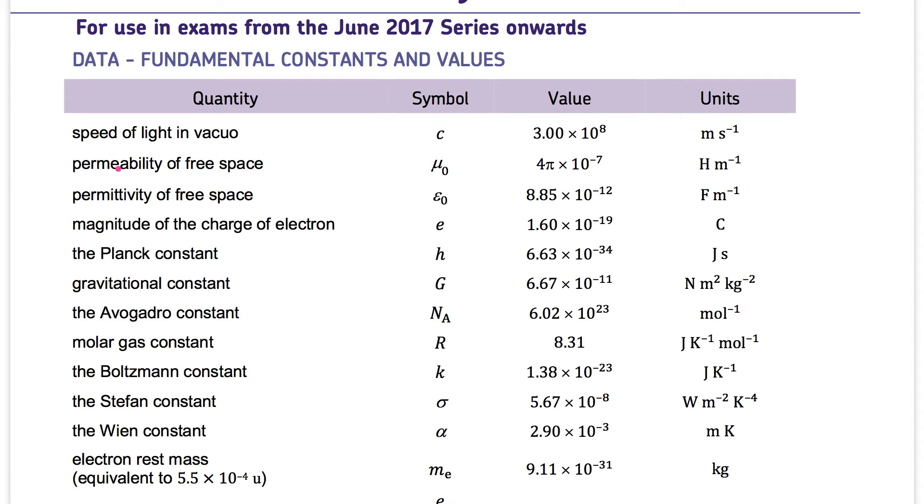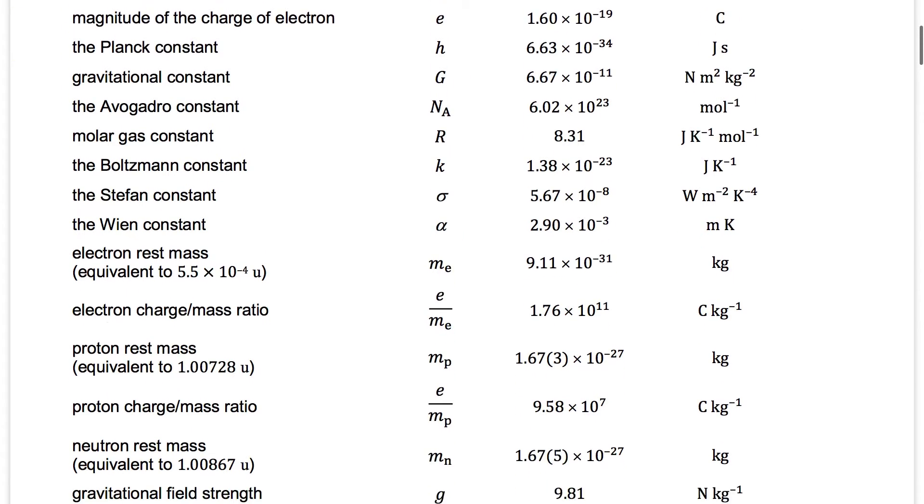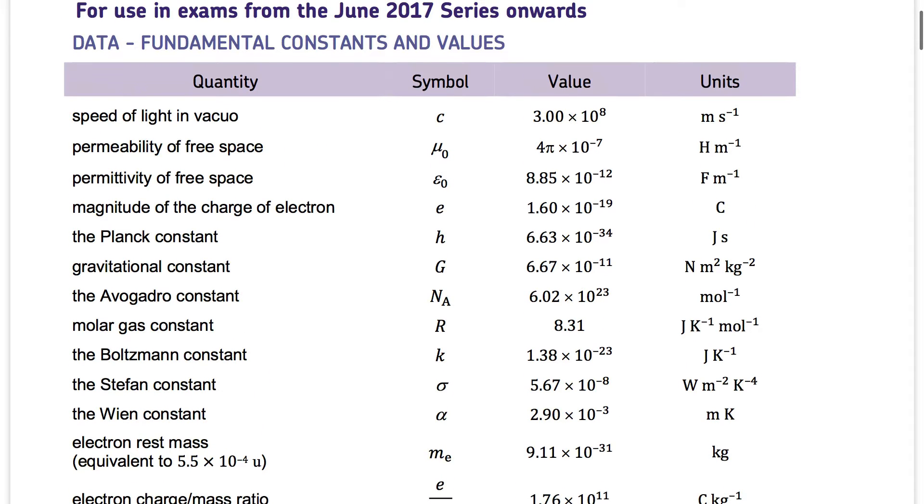Permeability of free space is mu sub zero. It is 4 pi times 10 to power minus 7 H per meter. Then permittivity of free space is epsilon sub zero which is equal to 4 minus 12 F per meter. And the magnitude of the charge of an electron, the symbol is e, small letter e. It's important that we use small letter e because the big letter E stands for energy.